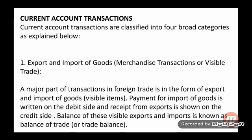Current account transactions are classified into four broad categories. The first one is export and import of goods, also called merchandise transactions, which constitute visible trade.